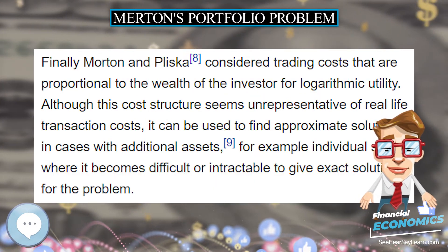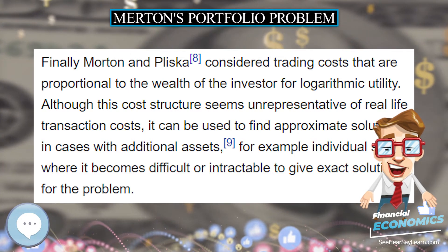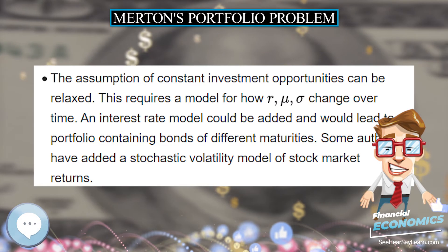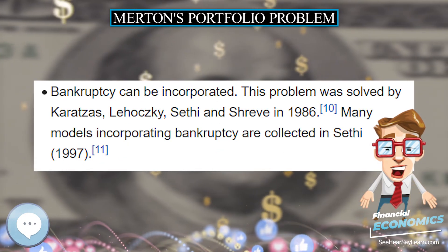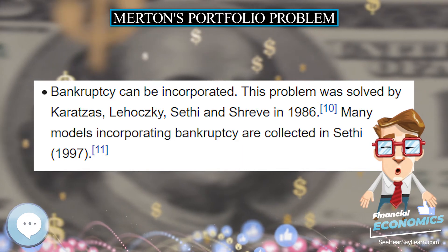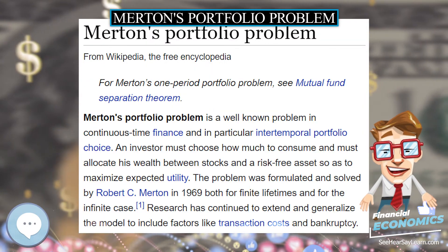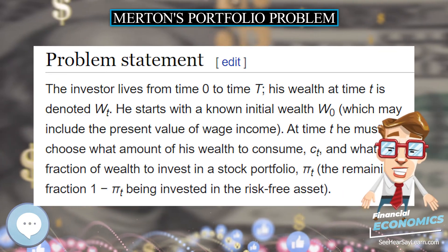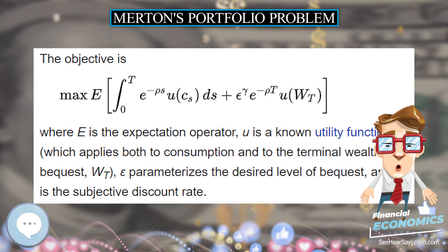Somewhat surprisingly for an optimal control problem, a closed-form solution exists. The optimal consumption and stock allocation depend on wealth and time as follows. This expression is commonly referred to as Merton's fraction. Note that W and t do not appear on the right-hand side, which implies that a constant fraction of wealth is invested in stocks, no matter what the age or prosperity of the investor.